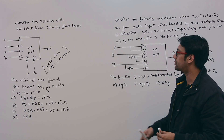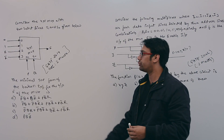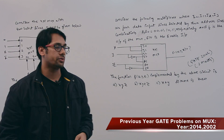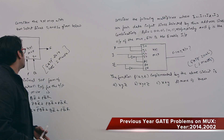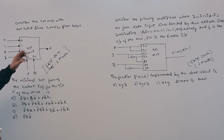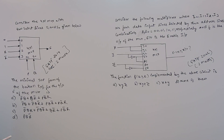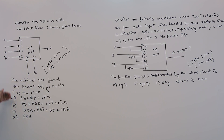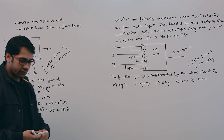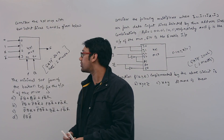Consider these two questions. This first question was asked in GATE 2014, Set 1, as a 2-mark question. They are saying: consider the 4×1 multiplexer with two select lines S0 and S1 given, representing 0, 1, 2, 3. They are asking for the minimal SOP form of the boolean expression for the output F of the multiplexer.